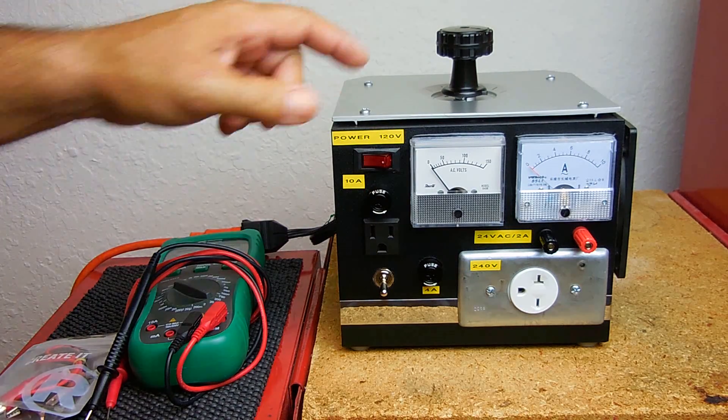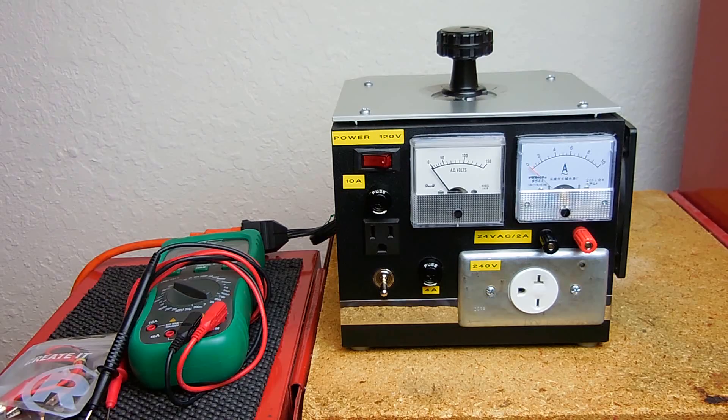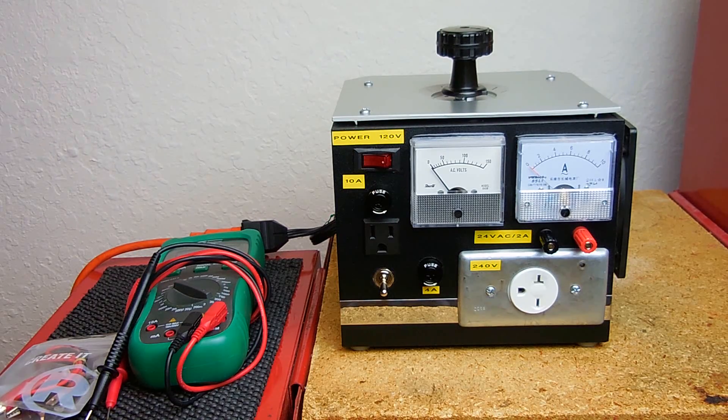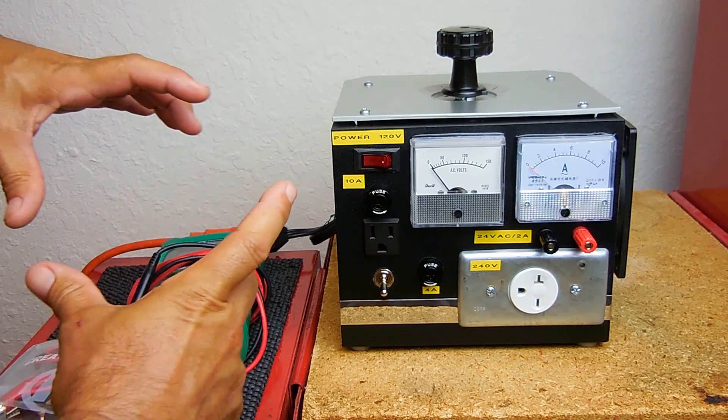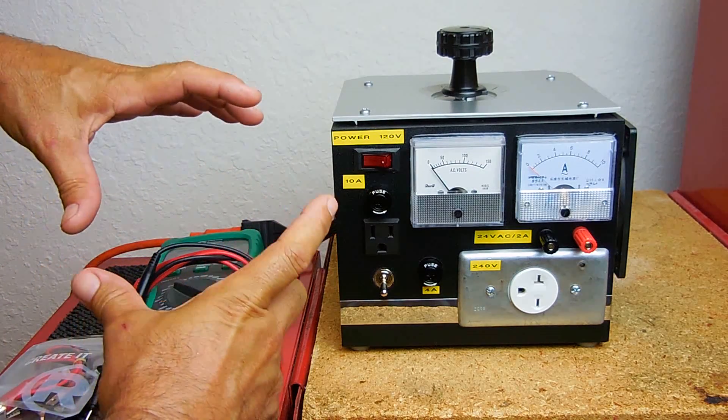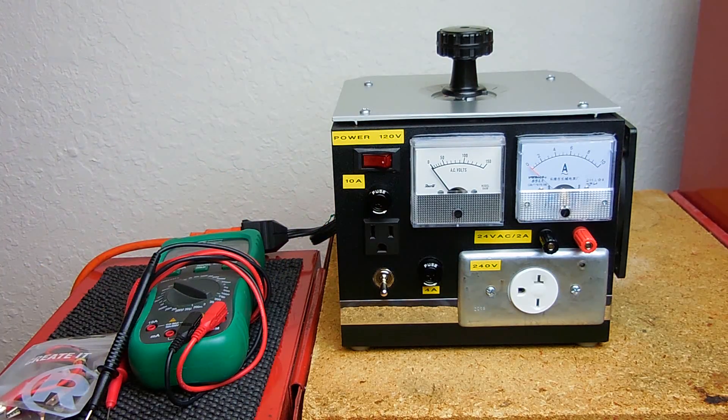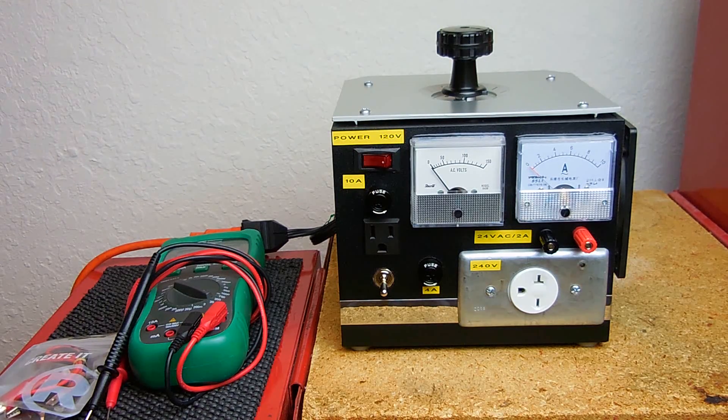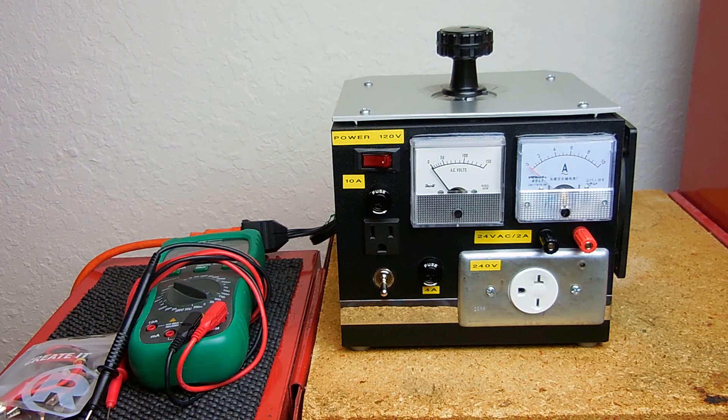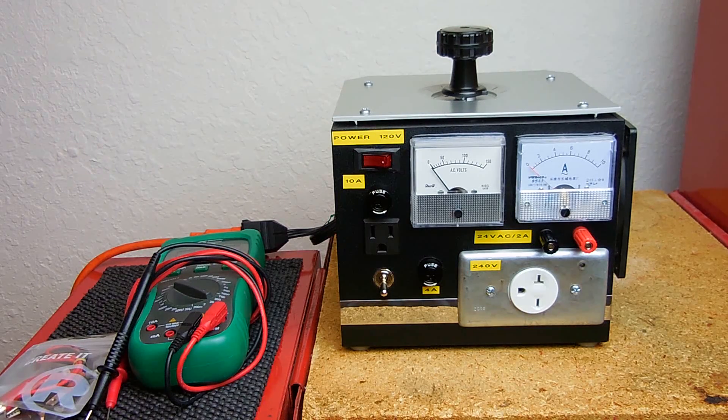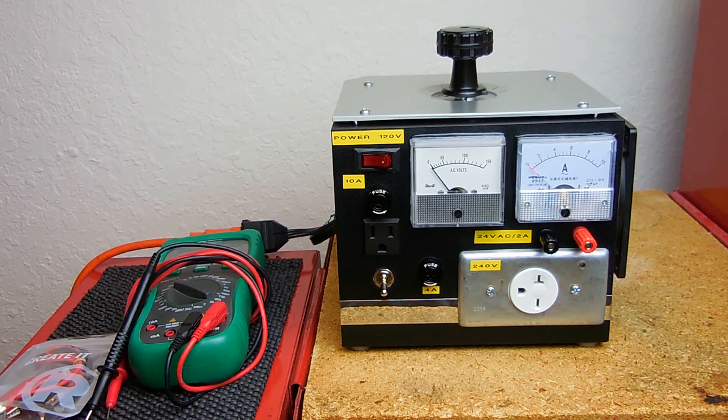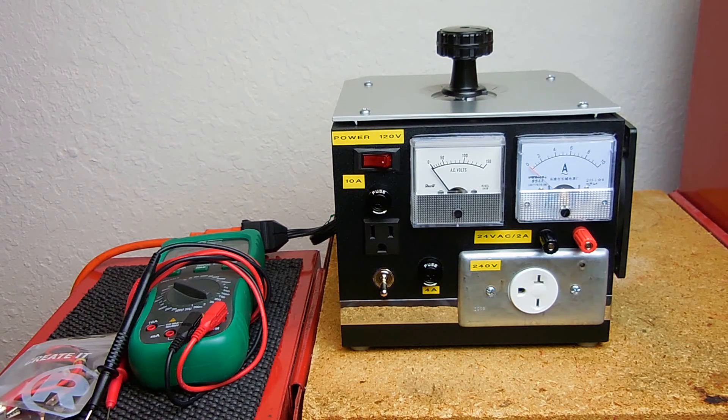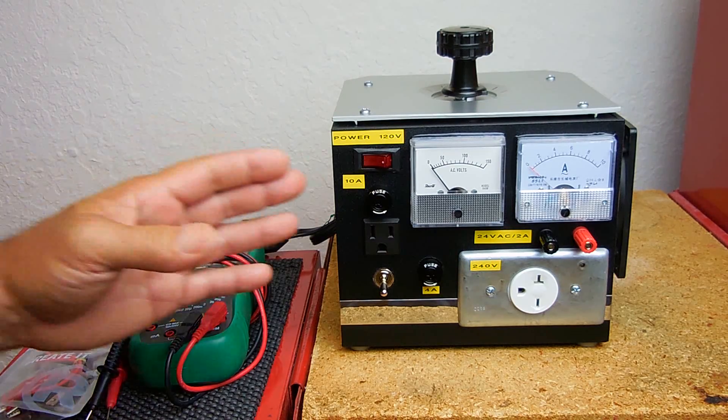Right off the bat you're going to see the knob on top and think that this is a variac that I made. Now I did consider making a variac using a very large toroid that I found. It was about this big on a trip to the ReStore. I picked it up for around five or six dollars. The secondary winding on it was 12 volt 50 amp, so I really didn't want to destroy it to make this project.